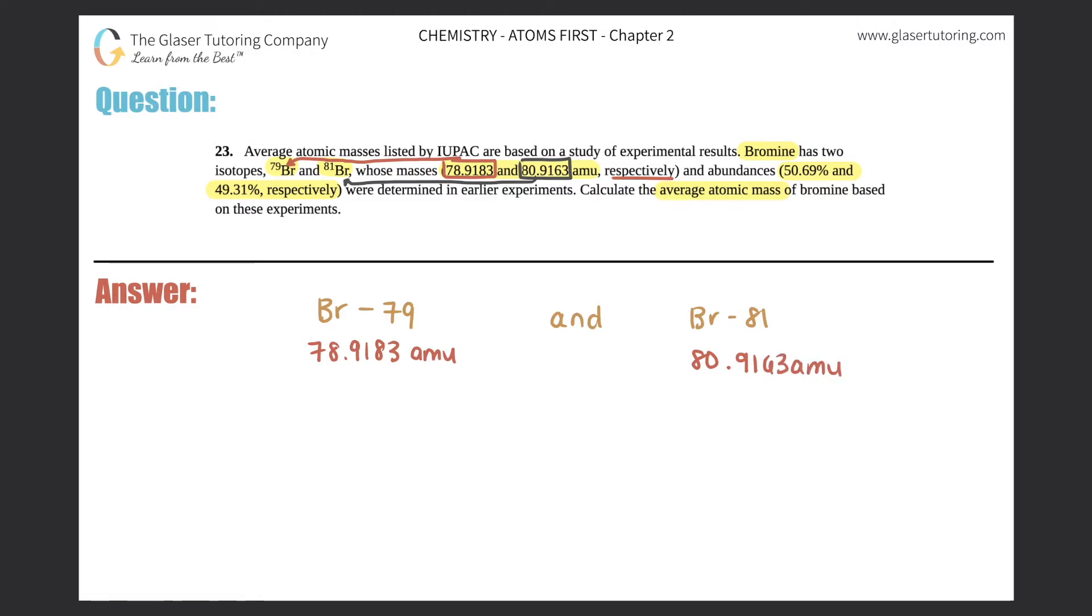And then once again, they say abundances respectively. So 50.69% would go with Br-79 and 49.31% goes with Br-81. And they want us to calculate the average atomic mass.